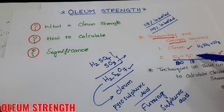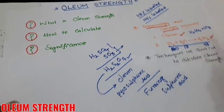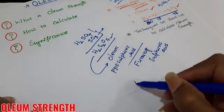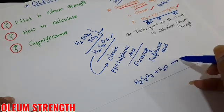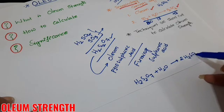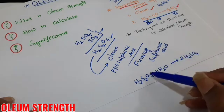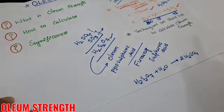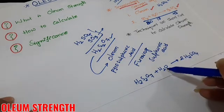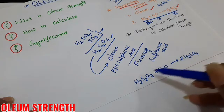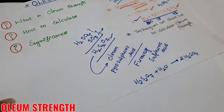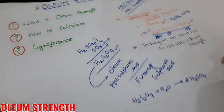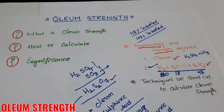When H₂S₂O₇ is mixed with water, 2 moles of sulphuric acid are formed. The real part of the reaction is only SO₃ reacting with water — not the entire oleum. So the central reaction is: SO₃ + H₂O → H₂SO₄. H₂S₂O₇ is called oleum, composed of SO₃ and H₂SO₄.